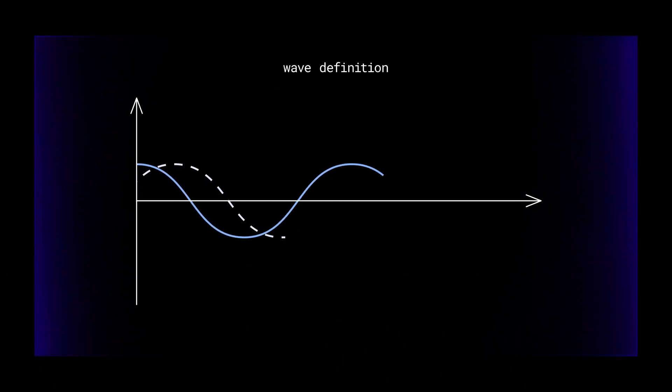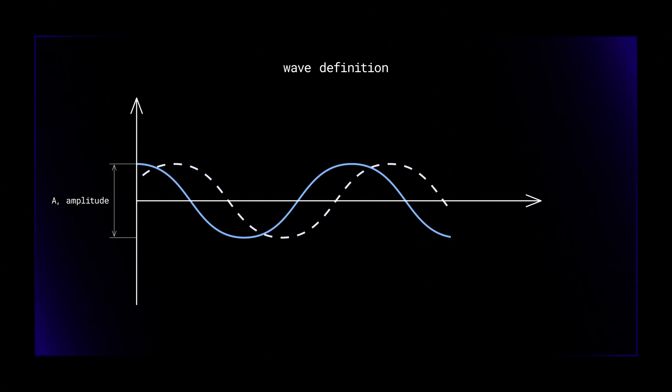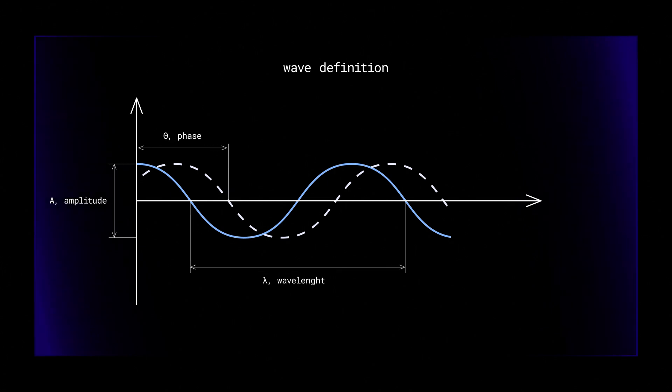First things first – the physics of the process. Let's remember the wave theory of light – very simplistic. It's important for this episode. We can define any wave by only three parameters – amplitude, wavelength and phase.